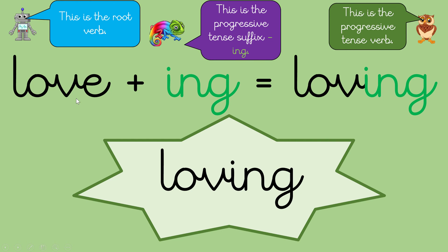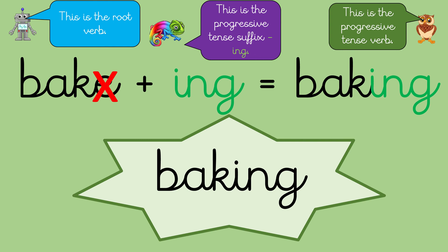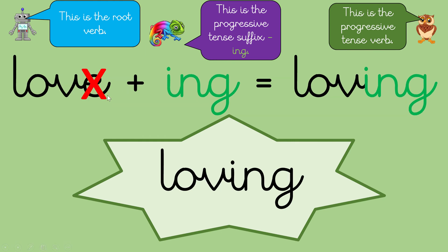Have a go at reading the first word. Brilliant — 'love'. And then we've got to add I-N-G. Everybody have a go at reading the progressive tense verb. Brilliant — it says 'loving'. Now we've got 'bake'. Let's get rid of that E — goodbye! And then we add I-N-G — brilliant, 'baking'. Have a go at reading 'baking' again. So you've got 'love', you remove the E, add I-N-G, and it becomes 'loving'. Excellent.